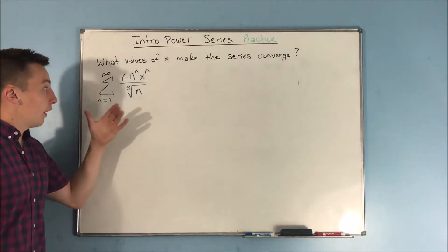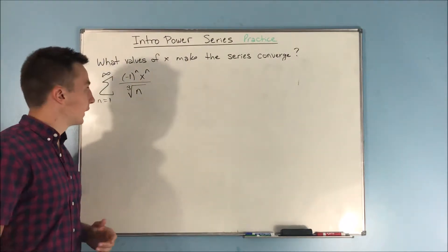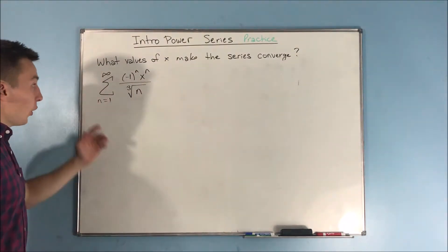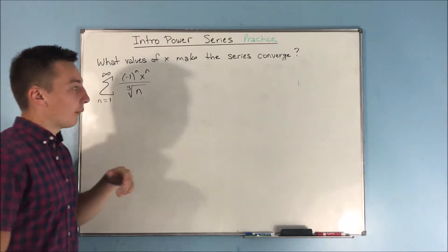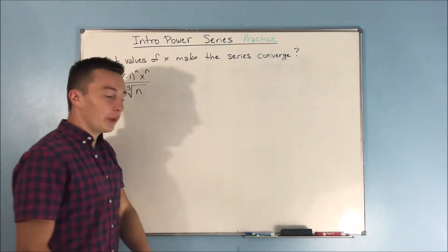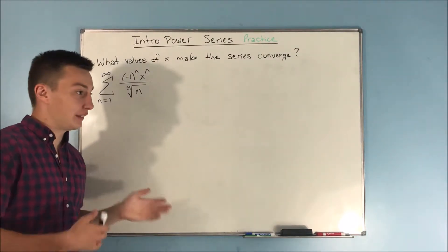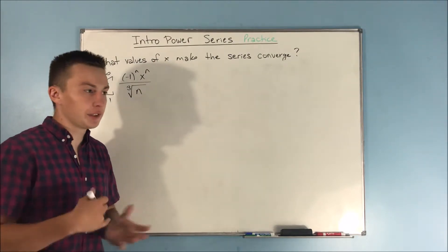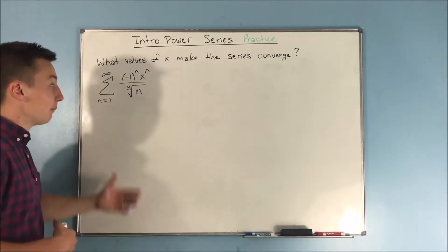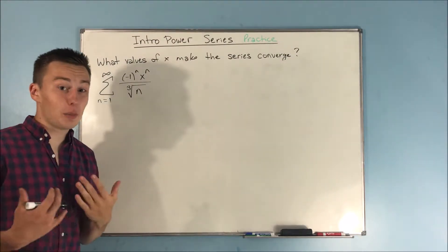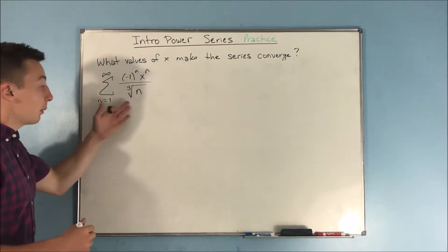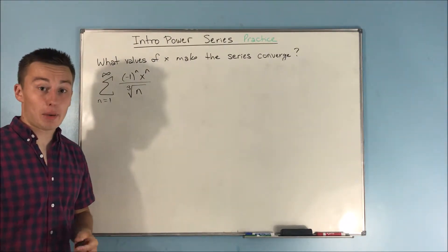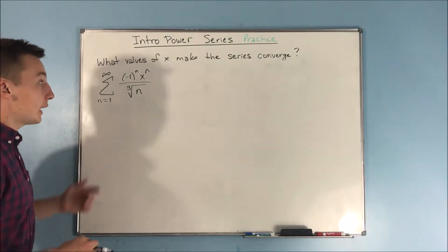Now we're going to deal with a more difficult series: the sum from n equals 1 to infinity of negative 1 to the n times x to the n, over the cube root of n. We're not going to be able to use the geometric series convergence, p-series, or anything like that — it's neither of those. So we're going to have to use the ratio or root test. We can't use the root test because the cube root of n in the denominator is not being raised to the nth power, so we'll use the ratio test.